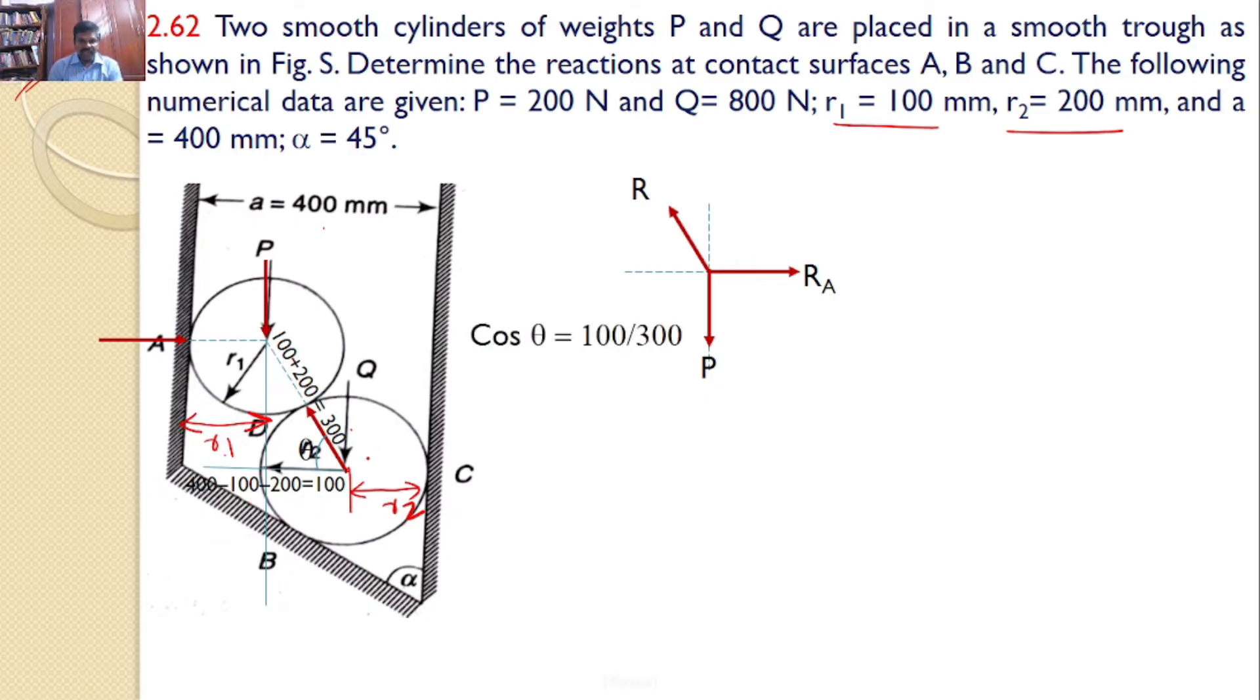So, you can find this value cos theta. That is horizontal by hypotenuse. So, 100 by 300, which gives the value of 70.53. That means this angle is 70.53.